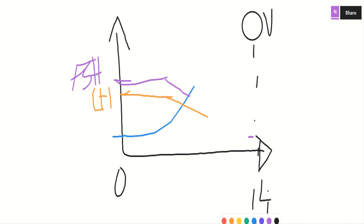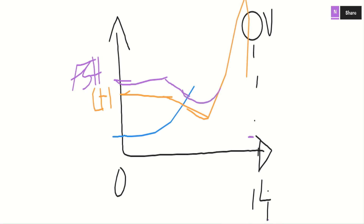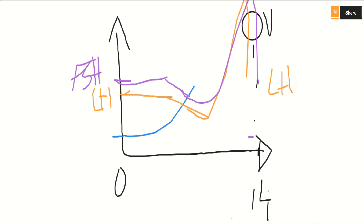Near day 14, near the time of ovulation, a plot twist happens: as estrogen rises, FSH and LH surprisingly spike and shoot up dramatically — particularly LH. A positive feedback relationship occurs near ovulation, and it is essential that this LH spike happens for ovulation to occur. Without this LH surge, ovulation cannot happen. This is very high-yield and I'll come back to it during the questions.